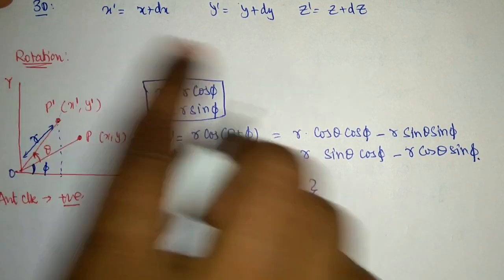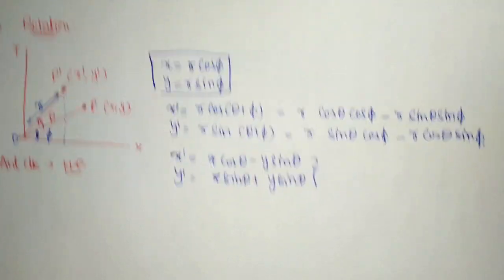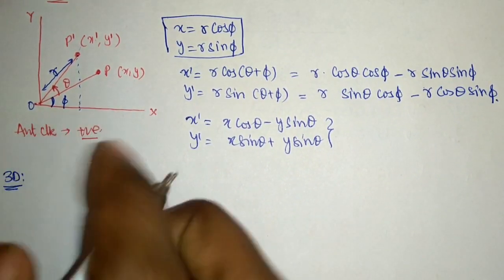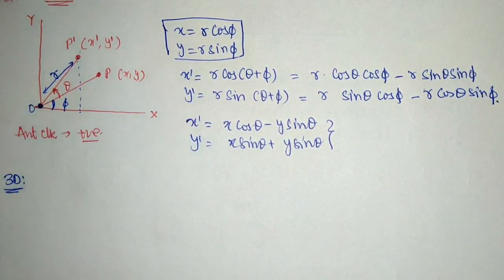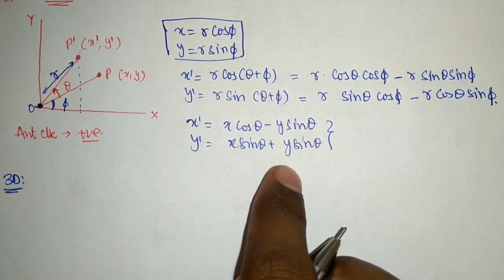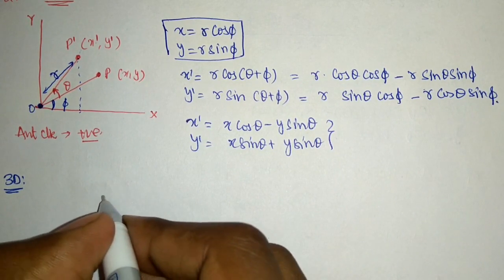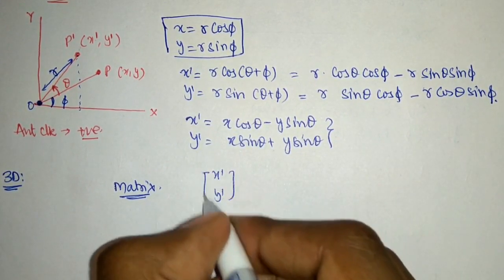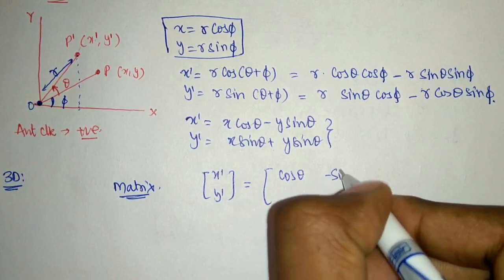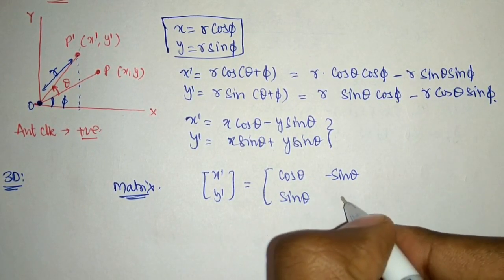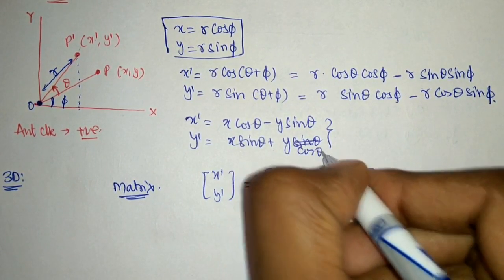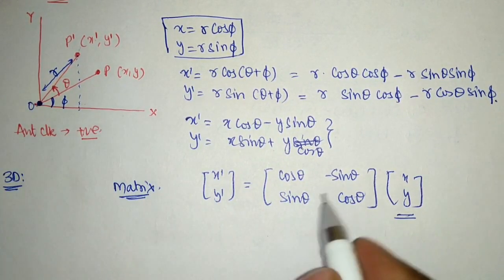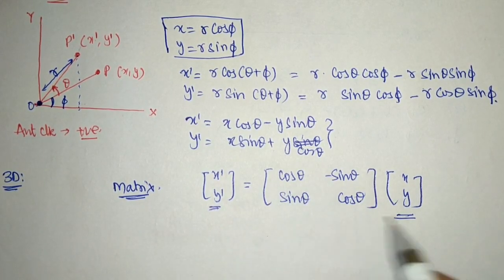So this is the basic transformation equation obtained with simple geometrical analysis, as we did for translation. For 2D, the matrix form is: [x dash, y dash] = [[cos theta, minus sin theta], [sin theta, cos theta]] times [x, y]. So if I have my old coordinates and keep the coordinate system the same, my new coordinates will be given by this rotation matrix.